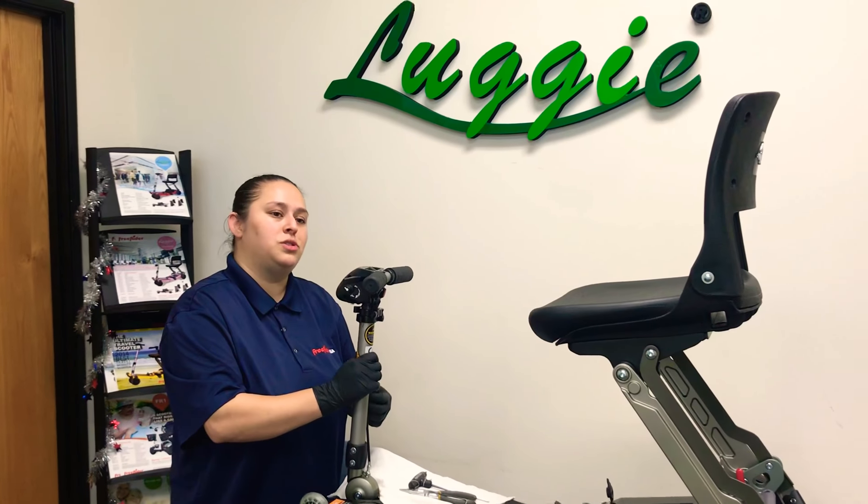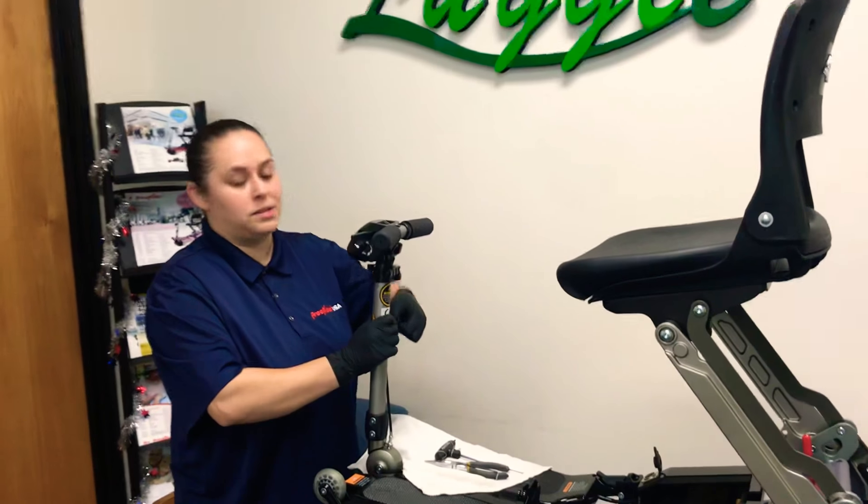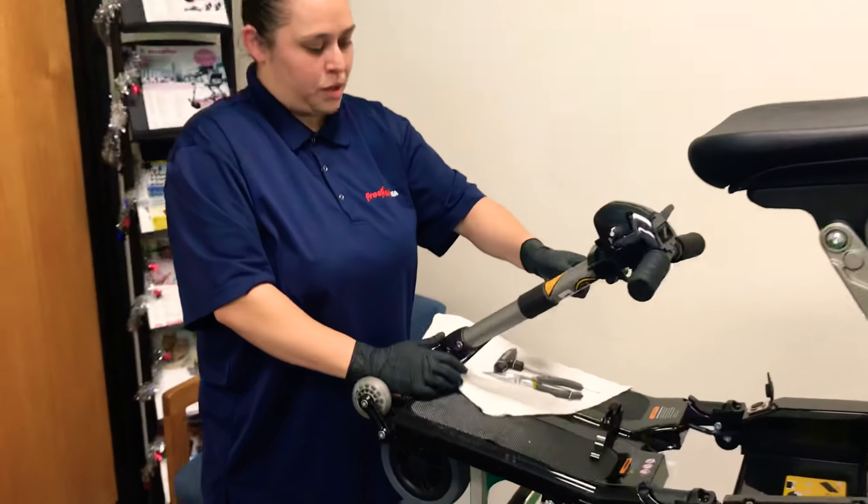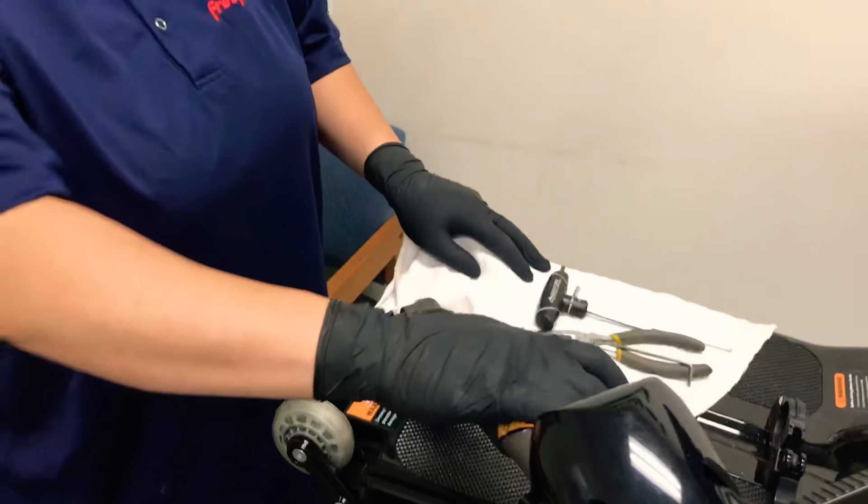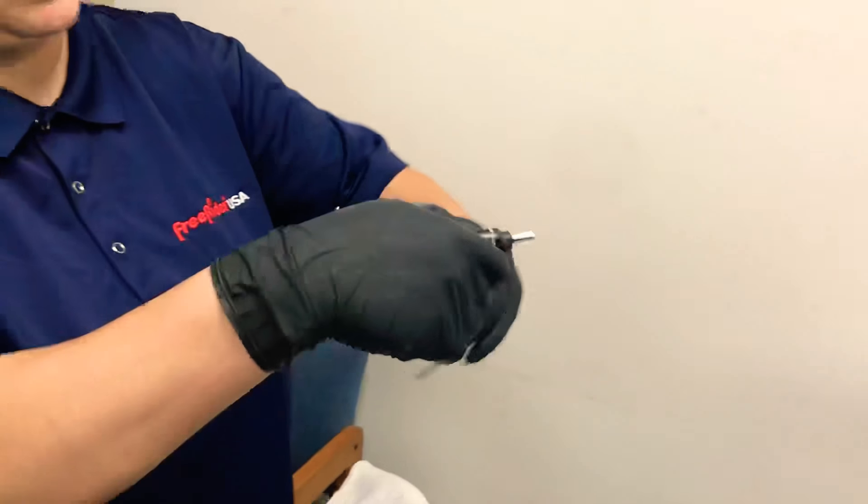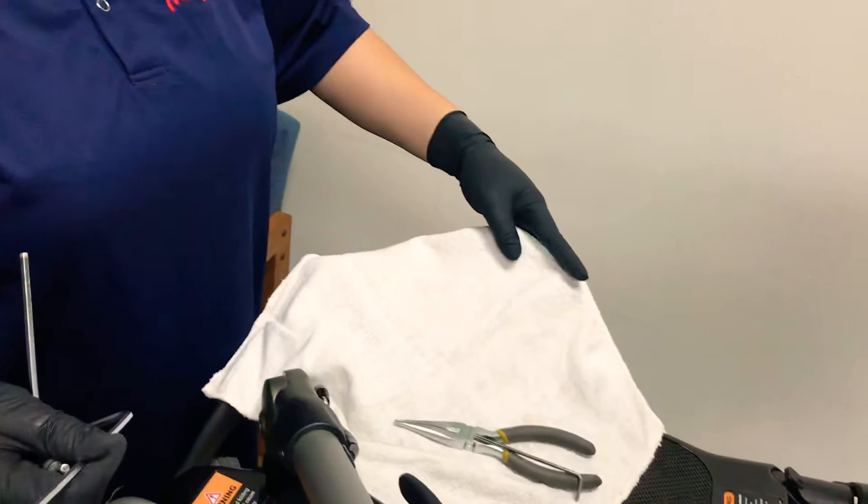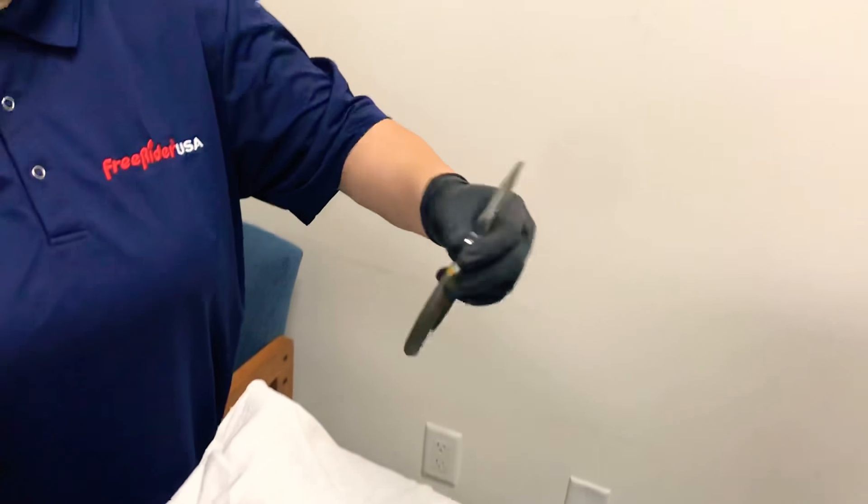In this video I'm going to demonstrate how to remove and install the gear inside of the handlebar joint base. First you want to bring the tiller down and then turn it to the side. You'll need two size 4 allen wrenches, maybe a rag to protect your scooter, a size 3 allen wrench, and some needle nose pliers.